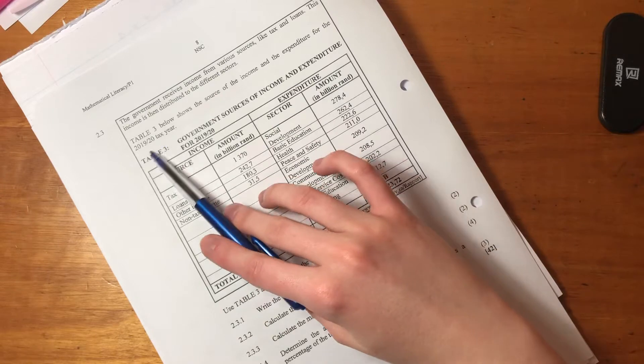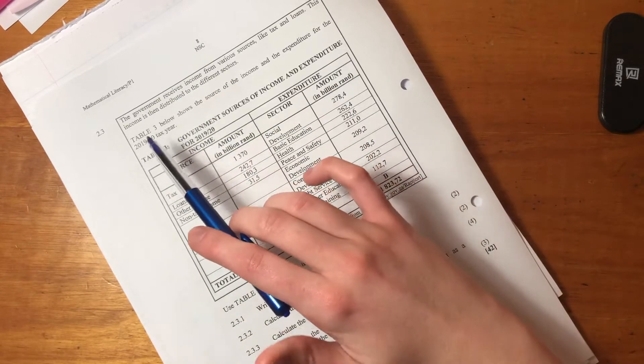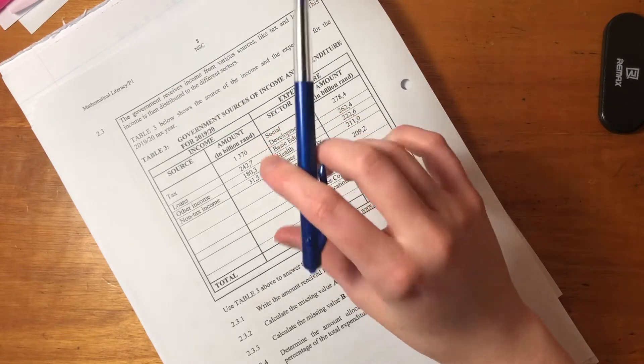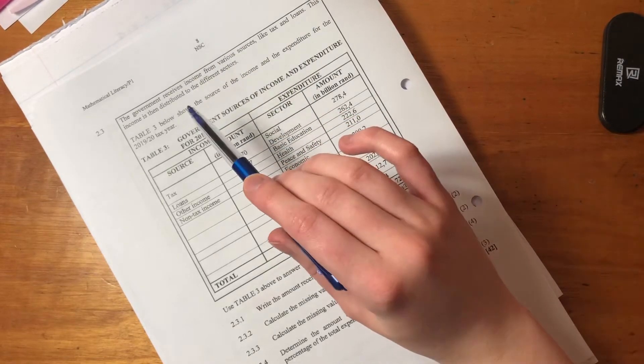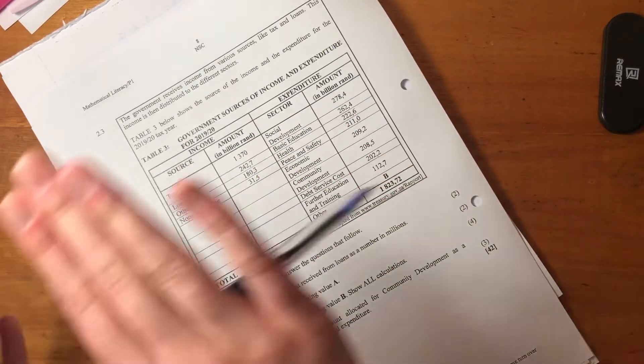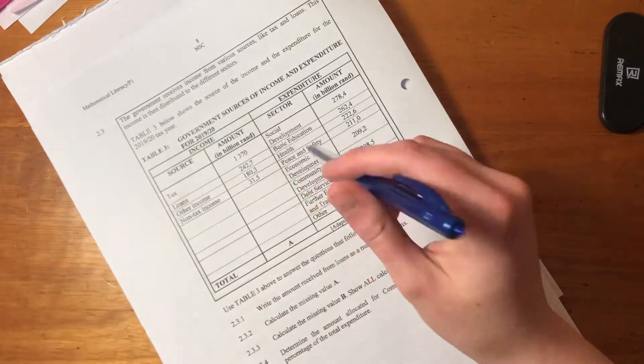Now you'll be thinking, why is the tax year over two years? The tax year in South Africa, I'm not sure what it's like in other countries, but ours runs from the 1st of March of a year to the end of February in the next year. That's why it actually goes across two years, hence that sort of interval.